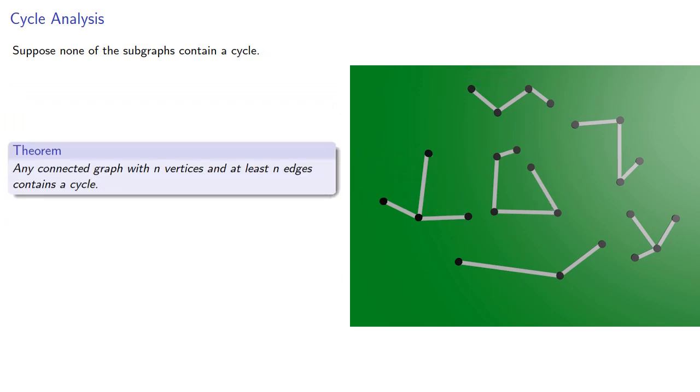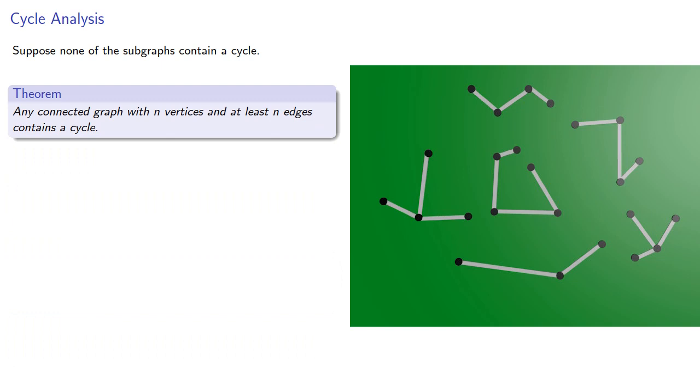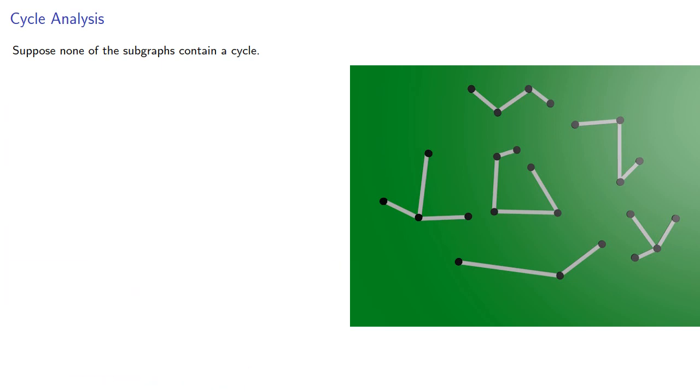Now, earlier we showed that any connected graph with n vertices and at least n edges contains a cycle.